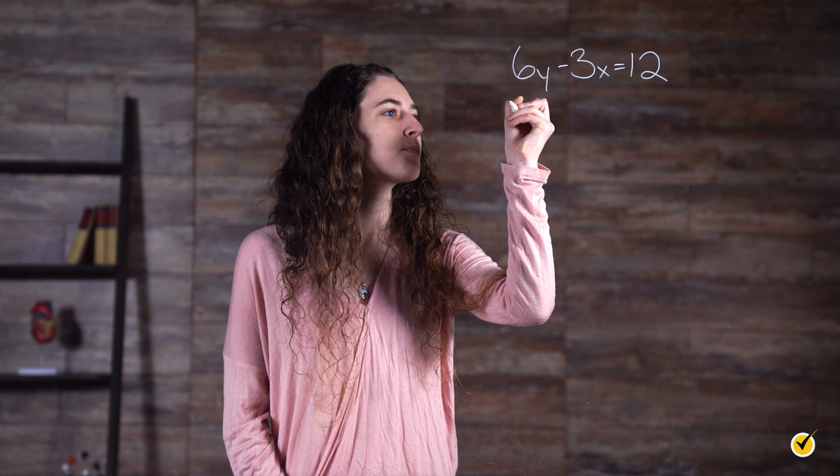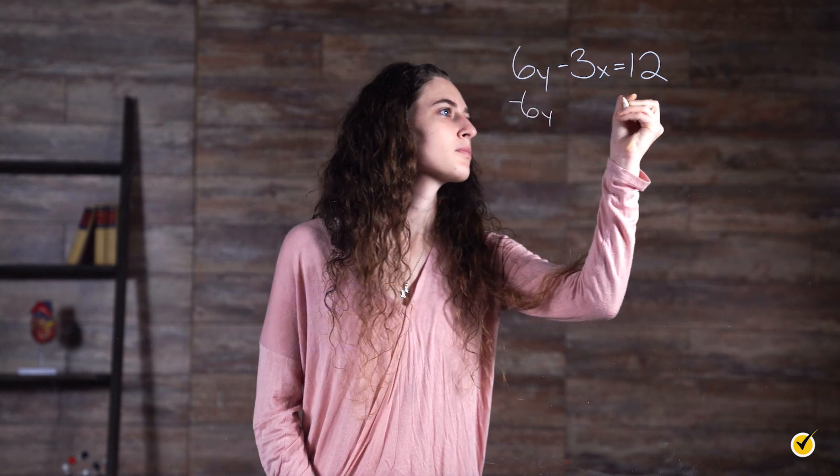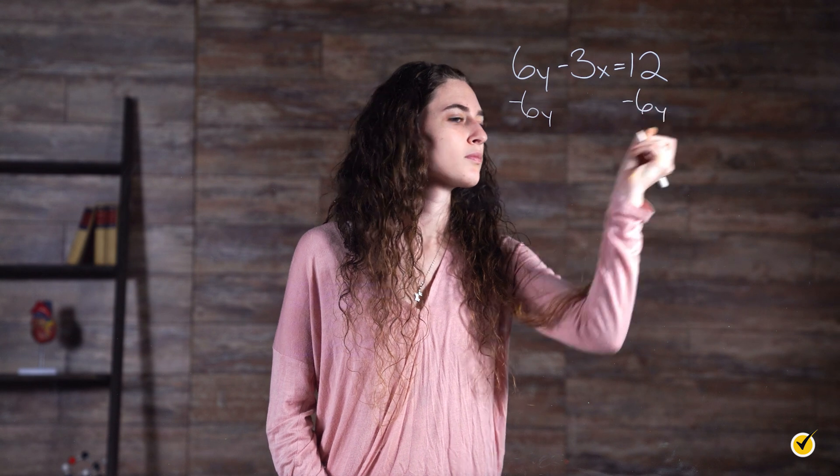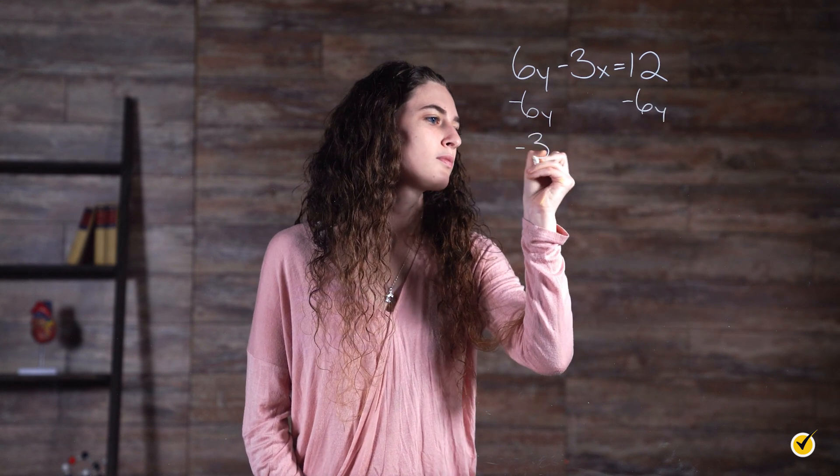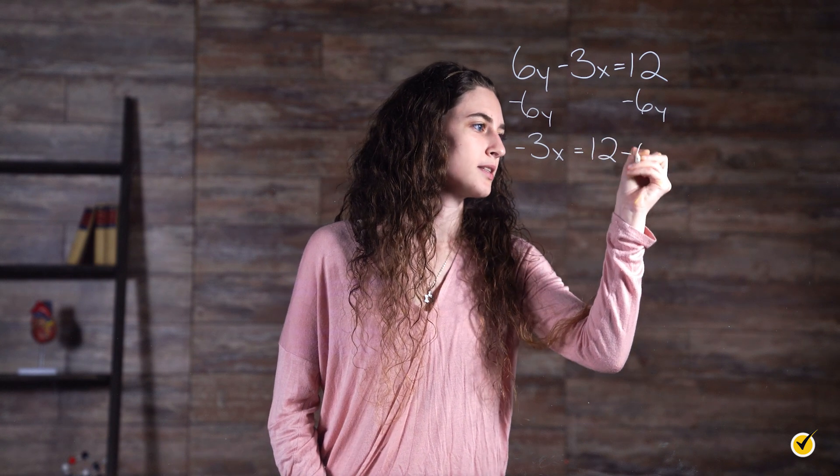Our first step to get our x variable by itself on the left side is to subtract 6y from both sides of the equation. So we have negative 3x equals 12 minus 6y.